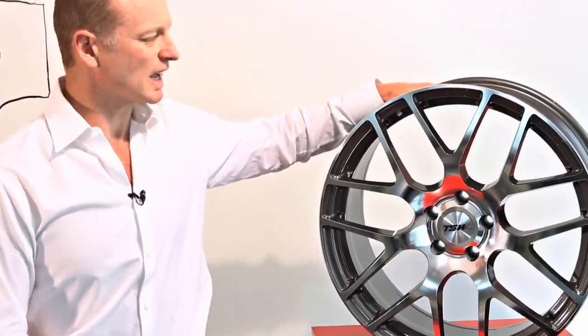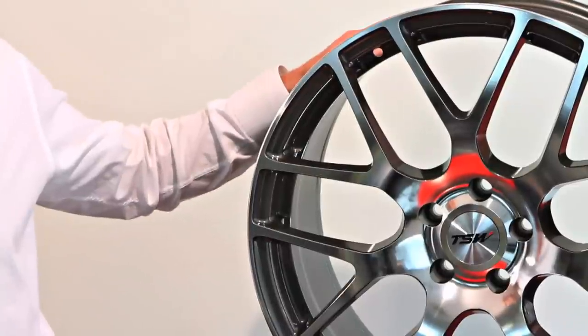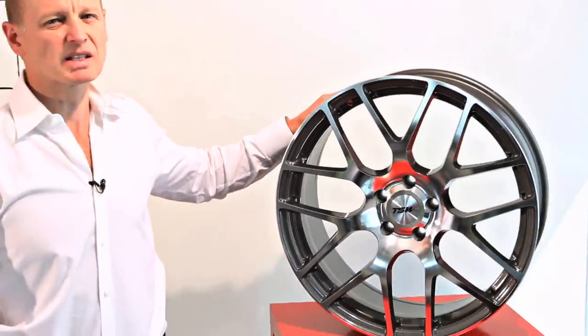The Nürburgring comes in three different colors. It comes in a gunmetal with a machine cut face or a mirror cut face. We also make it in a matte gunmetal finish and we make it in the gunmetal with the machine cut face and a bronze finish.